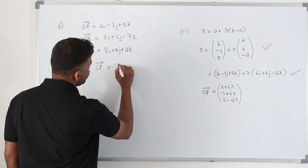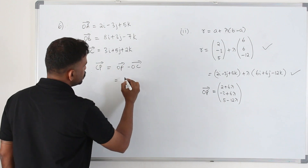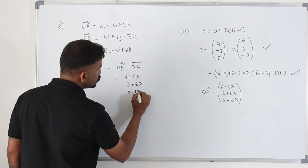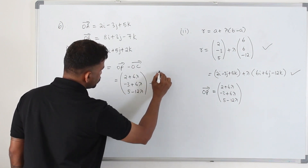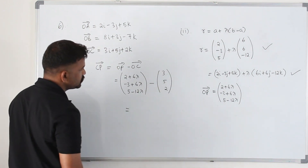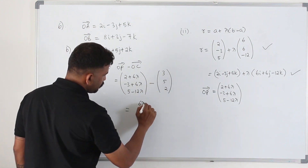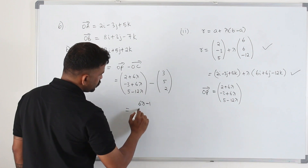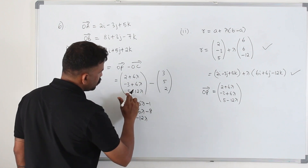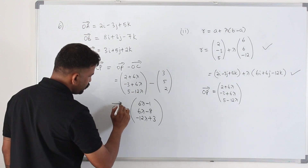To find CP vector, write it as OP minus OC. So that is (2 + 6λ, −3 + 6λ, 5 − 12λ) minus OC which is (3, 5, 2). Subtracting gives: first component 6λ minus 1, second component 6λ minus 8, and third component negative 12λ plus 3. That is the CP vector.